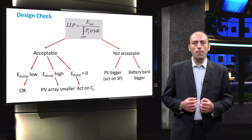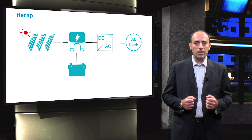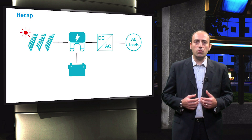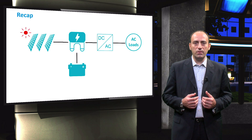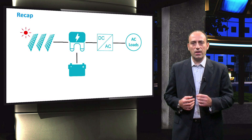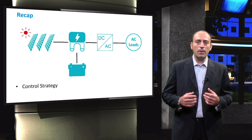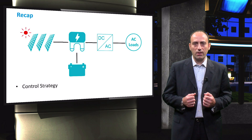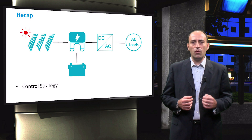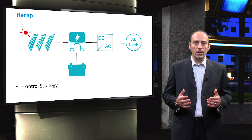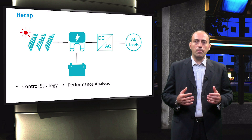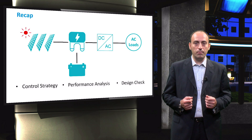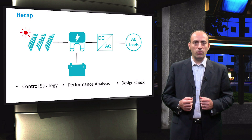With this video, we come to the end of the detailed design of a standalone PV system. You studied the final steps needed to complete the design of a standalone PV system using the detailed design strategy. By implementing a control strategy, you were able to regulate the battery bank current and simulate the performance of the PV system. Finally, evaluating the loss of load probability, the PV system design can be approved when the calculated LLP value is within acceptable limits.